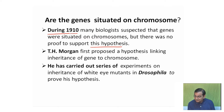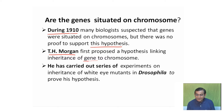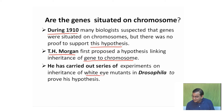T.H. Morgan first proposed a hypothesis linking the inheritance of genes to chromosomes. He carried out a series of experiments on the inheritance of white eye mutants in Drosophila to prove his hypothesis, as he was very expert in carrying out experiments on Drosophila.